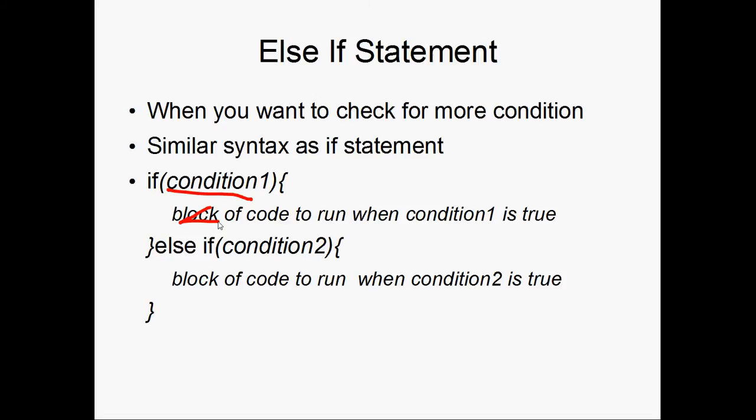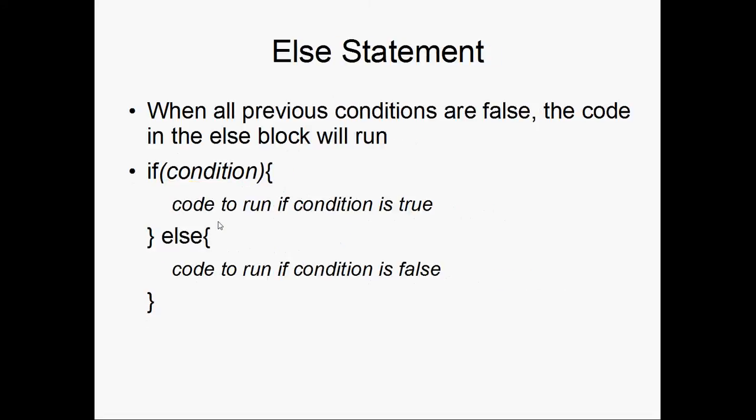Now here's the else statement, which is the final part of this. When all the previous conditions are false, the code in the else block will run. So let's say this condition right here is false. It'll skip over the code below it and simply go to the else statement.